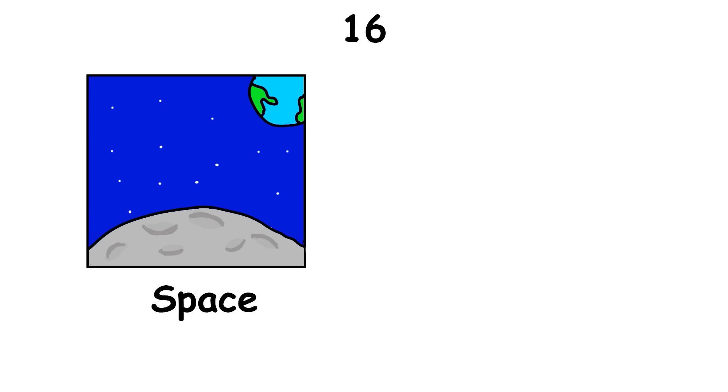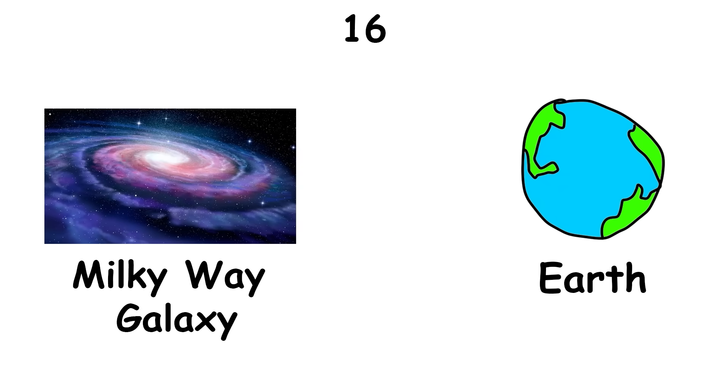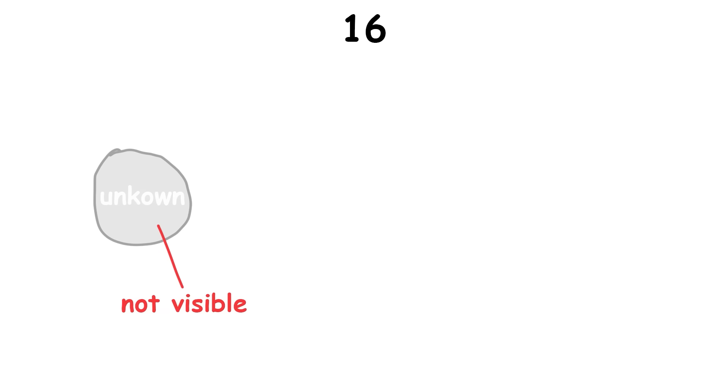There is an anomaly in space called the Great Attractor that pulls anything close enough around it towards it. The Milky Way galaxy, and so Earth, are also getting attracted by this thing. We have no idea what the thing that is pulling us is, as it's not visible, because it lies within the same plane as our own galaxy.